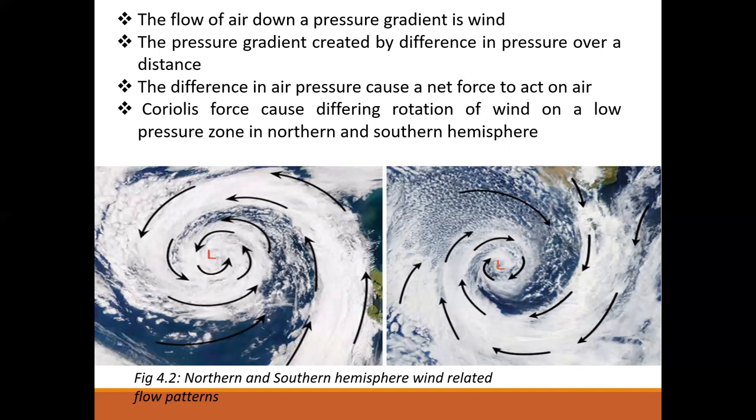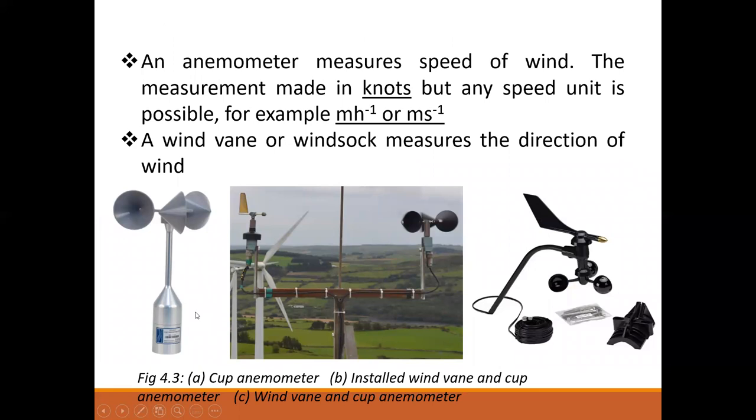Looking at this figure, we have what is called the Coriolis force, which causes differing rotation of wind from a low pressure zone to a high pressure zone in the northern hemisphere and also in the southern hemisphere. These flow patterns are very important if you are going to install a solar system or even a wind turbine.